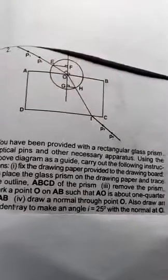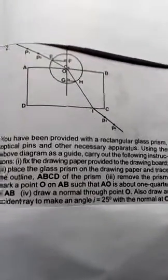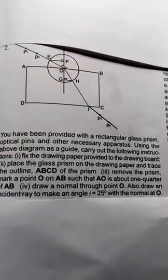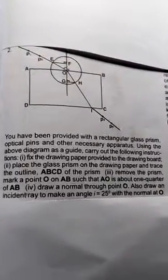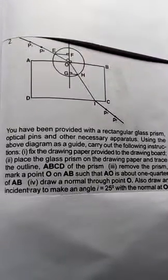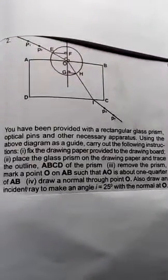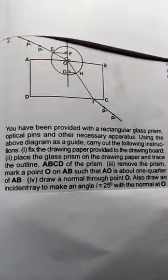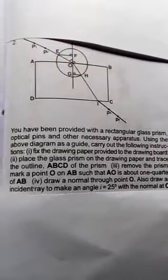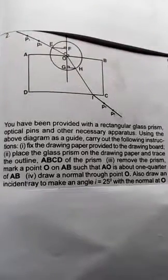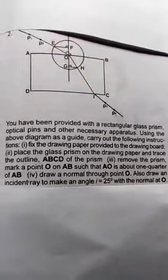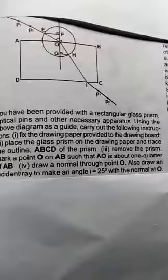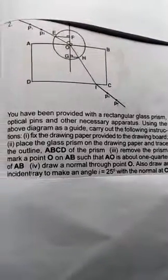Guys, welcome back. Now we have a question here. As you can see from the diagram, we have a rectangular glass prism. The question said you have been provided with a rectangular glass prism, optical pins, and other necessary apparatus. Using the above diagram as a guide, carry out the following instructions: use the drawing paper provided, place the glass prism on the drawing paper, and trace the outline ABCD of the prism.